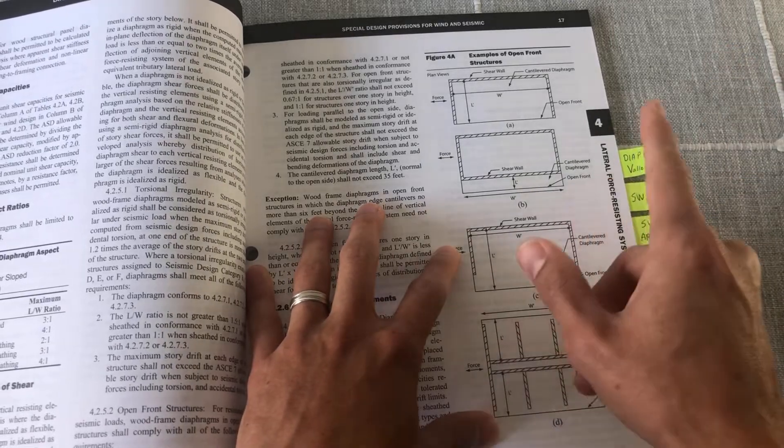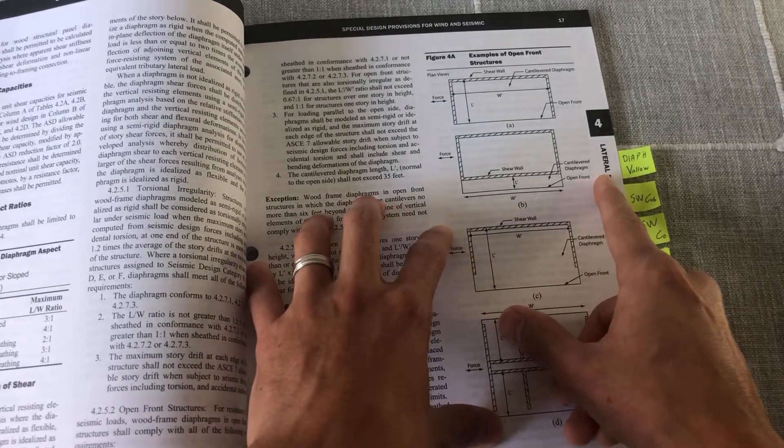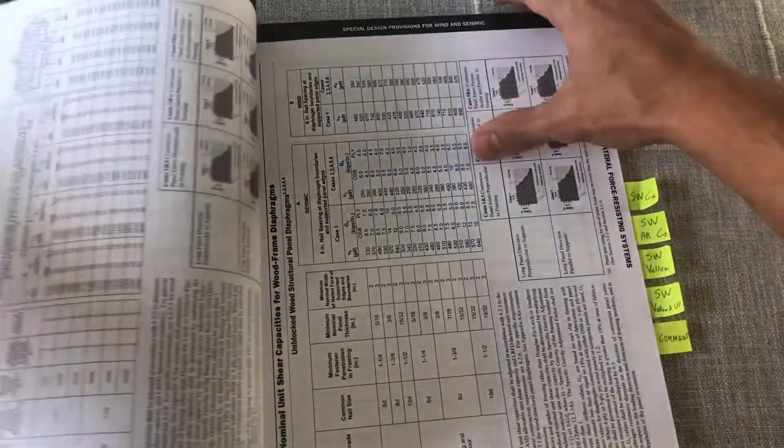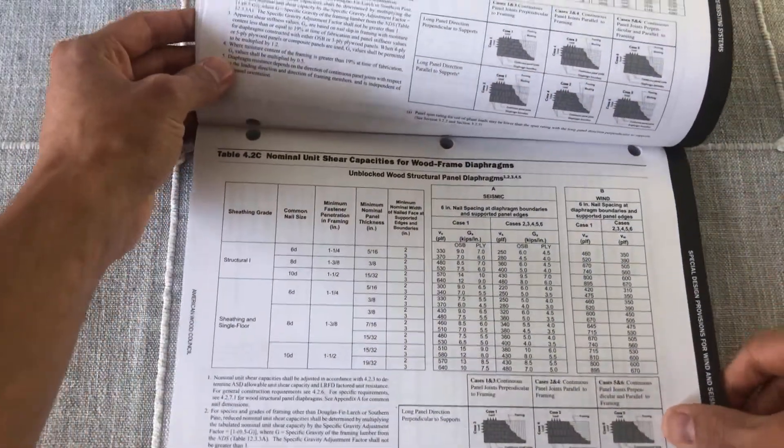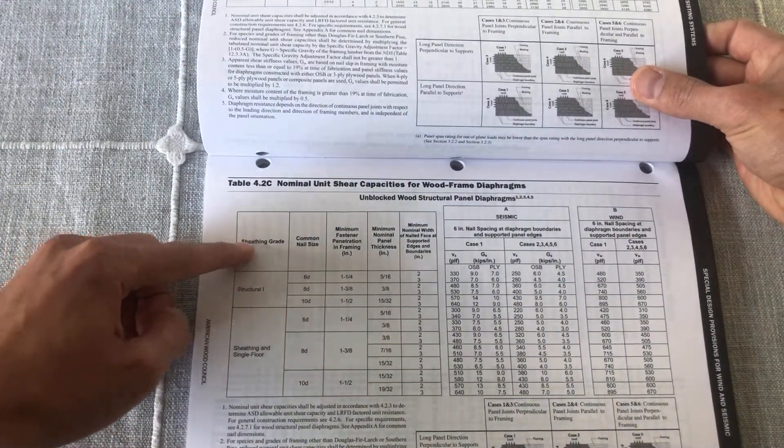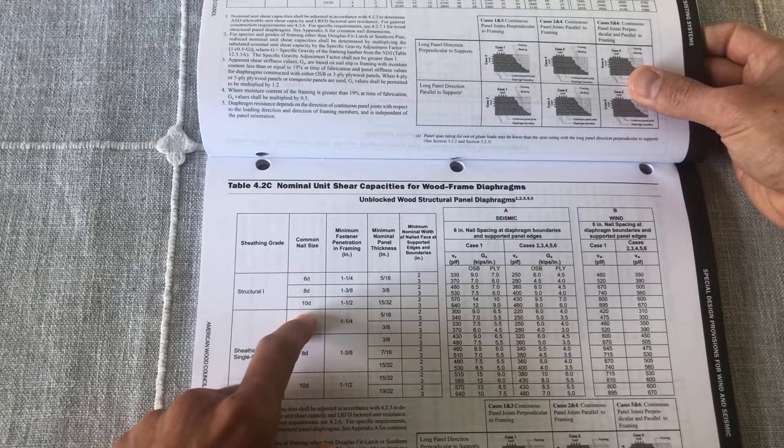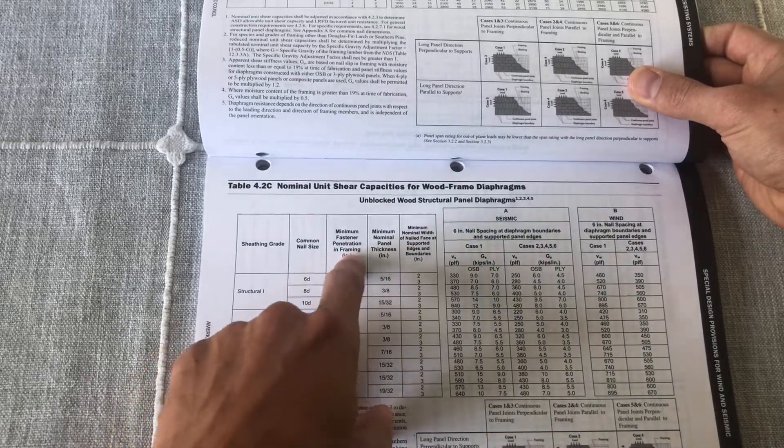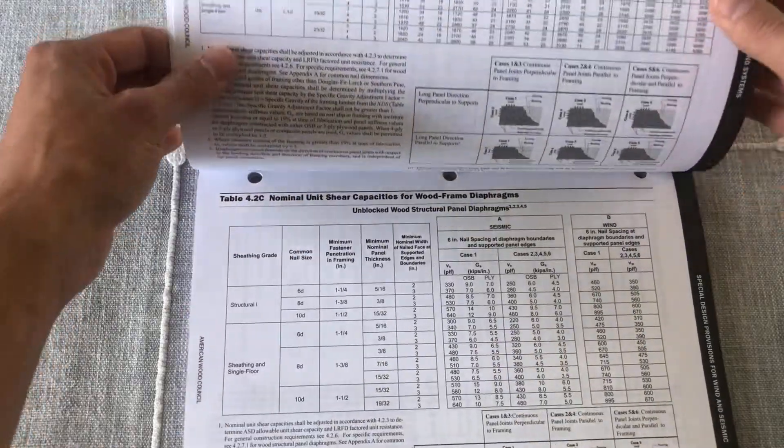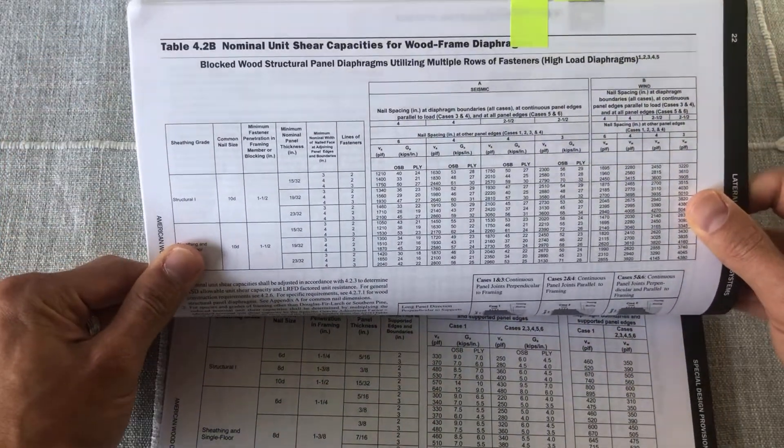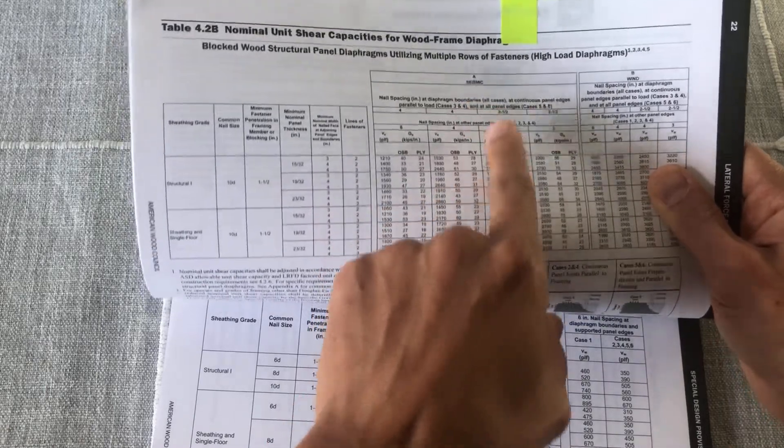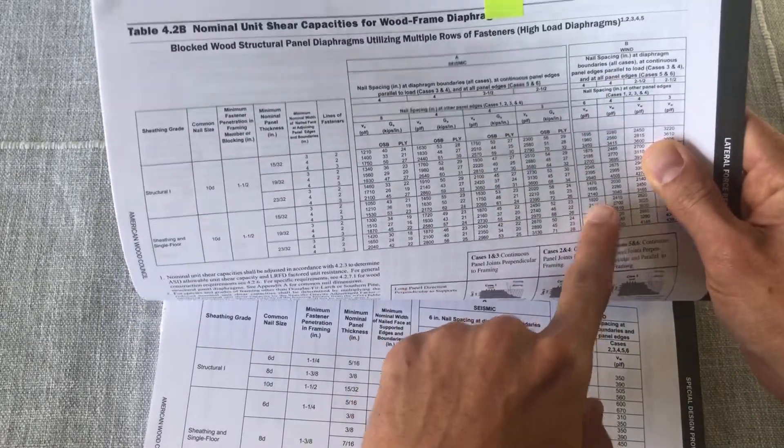But before, for diaphragms still, we have now shear capacities. Let's take a look at it here, and it's based on a lot of different grades. We have the nail size, minimum fastener penetration, and all these different requirements. And the table actually starts right here, and you get your capacity for either seismic applications or for wind applications.